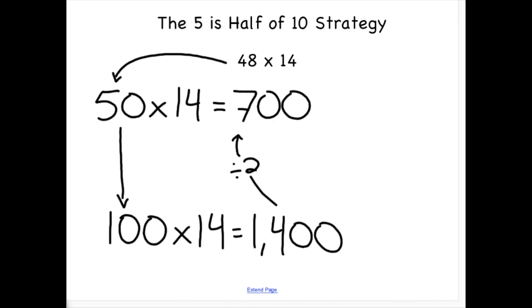50 is 2 groups of 14 over my original 48 groups of 14 that I had, so I am going to subtract 2 groups of 14, or 28, from my 700 to get the answer to my original problem, which is 672.